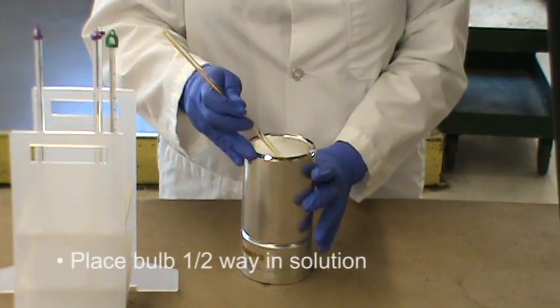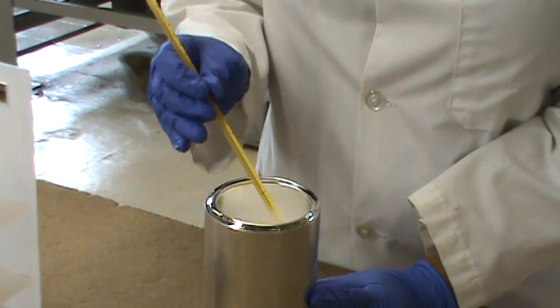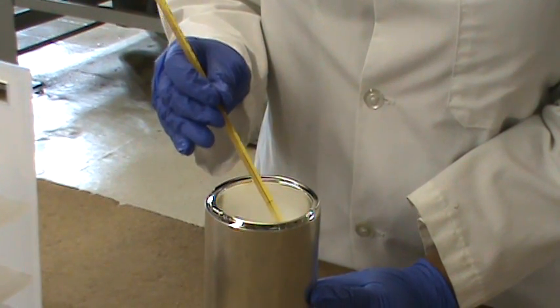Place the thermometer bulb halfway into the cup of solution, keeping the thermometer upright. Allow the liquid column to retreat into the bulb.